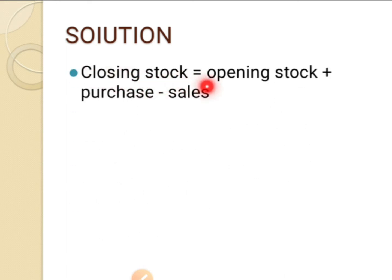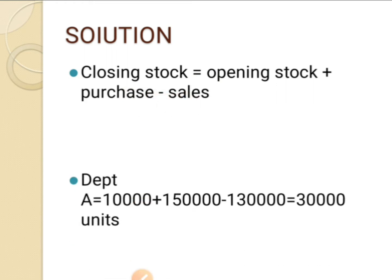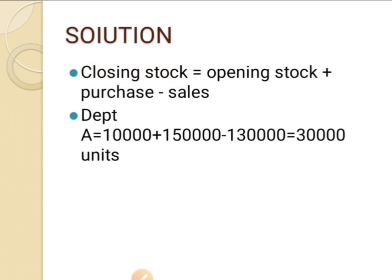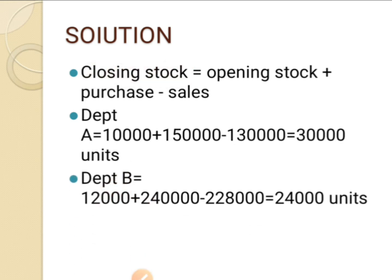Closing stock is equal to opening stock plus purchase minus sales. For department A, opening stock is 10,000 plus purchase 1,50,000 — total comes to 1,60,000 minus 1,30,000. The balance is 30,000. That is the closing stock. And for department B, 12,000 plus 2,40,000 minus 2,28,000 is equal to 24,000 units.